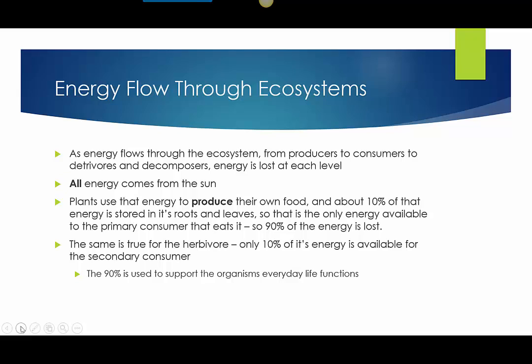The same is true for the herbivore — only 10% of its energy is available for the secondary consumer to use. And the same would be true for the secondary consumer: only 10% of its energy would be available for whatever predator is hunting and eating it. So if you think about 100% of the energy starting with the sun, losing 90% each time through each species, by the time you get to the top of some food chains, that apex predator is only getting maybe 1% of the total available energy from the plants.